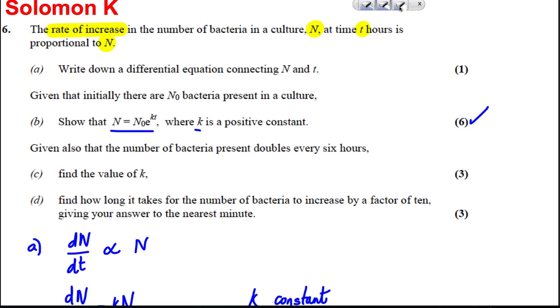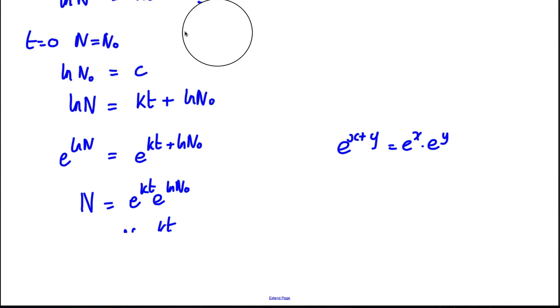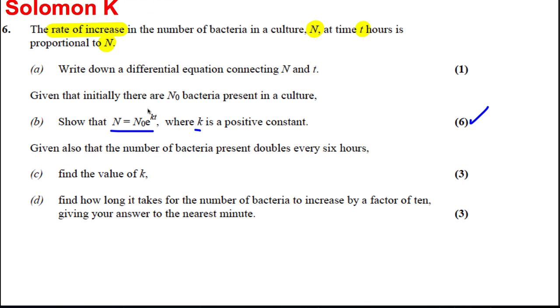Okay, now we're going to move on to the rest of the question. I'm just going to rub this out for now because we've got that work written down in the question. So it says, given also that the number of bacteria present doubles every six hours, find the value of K.